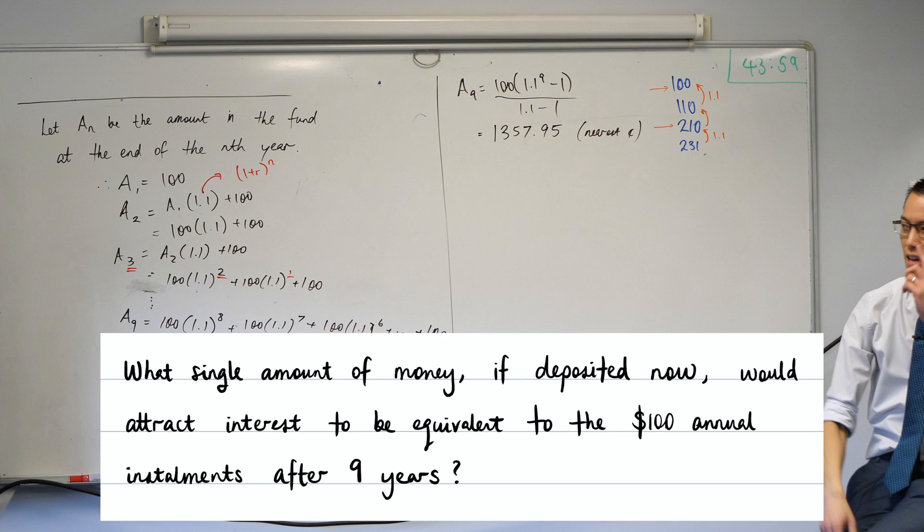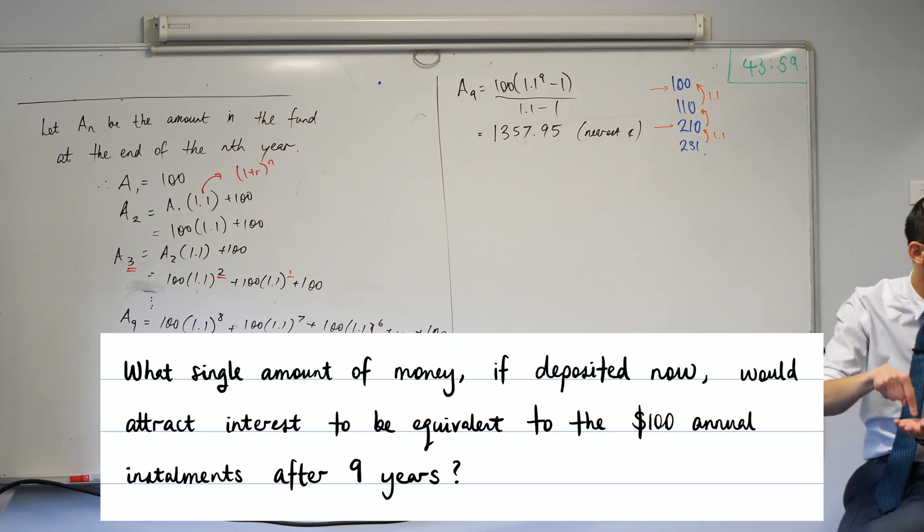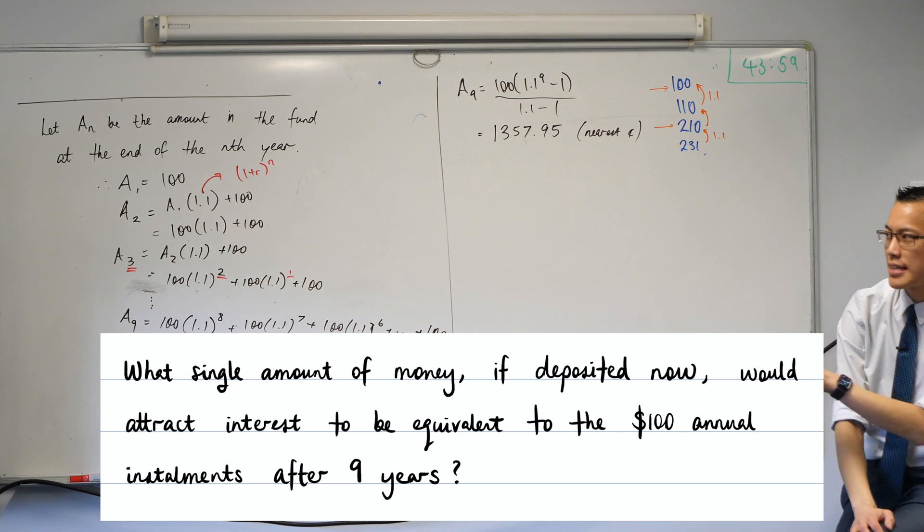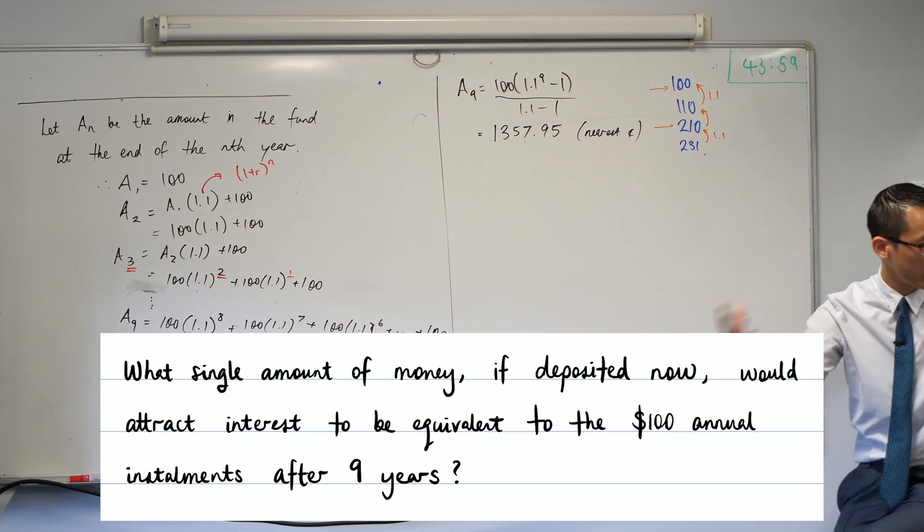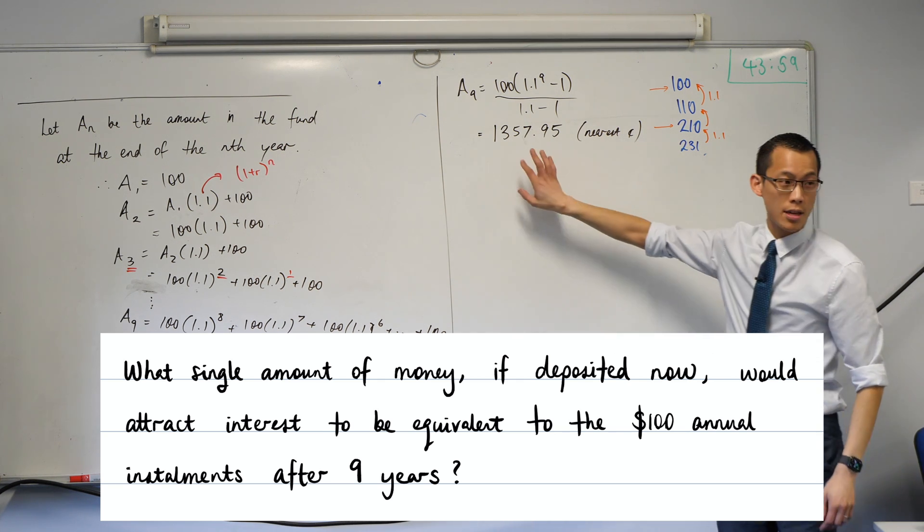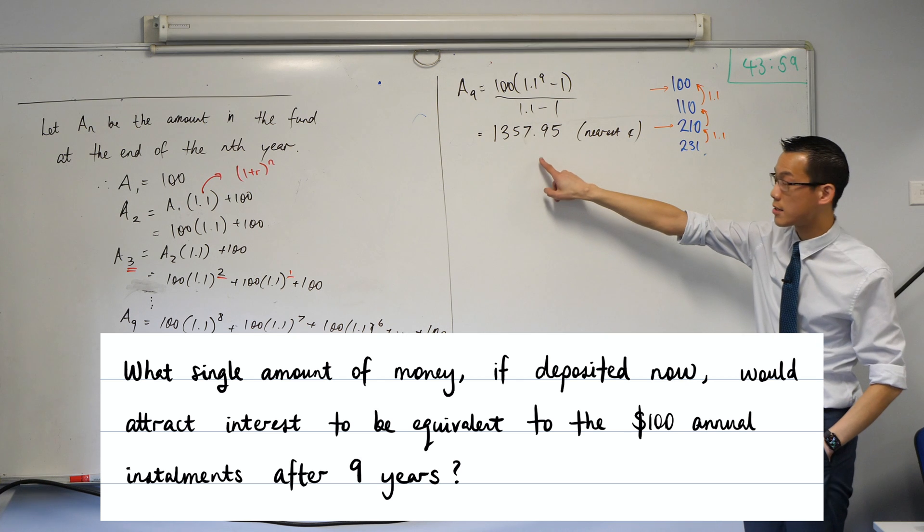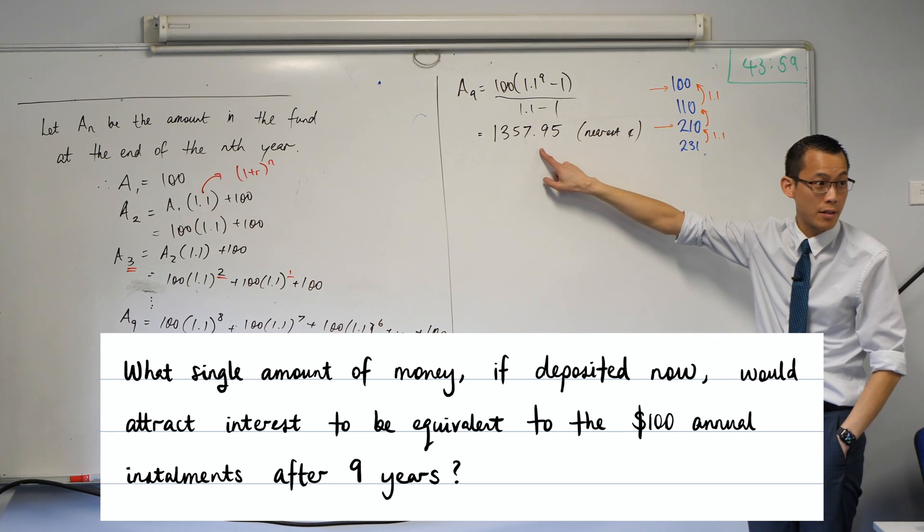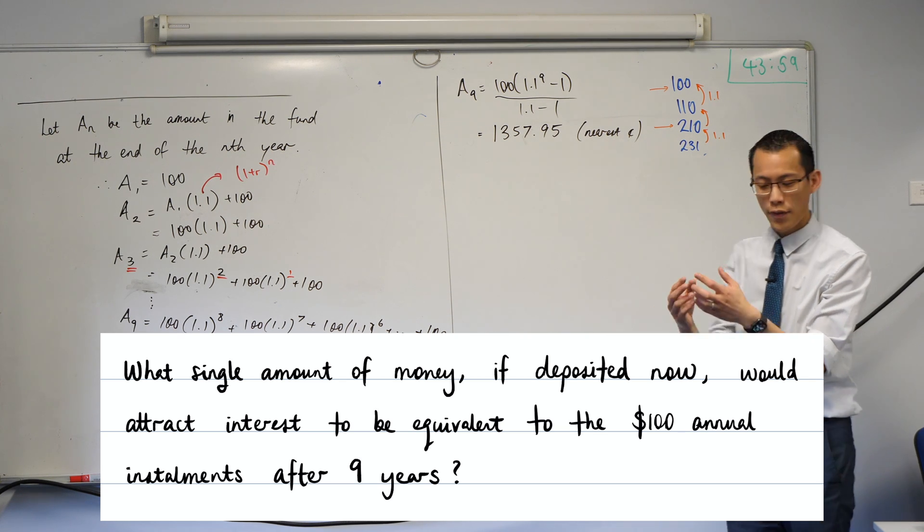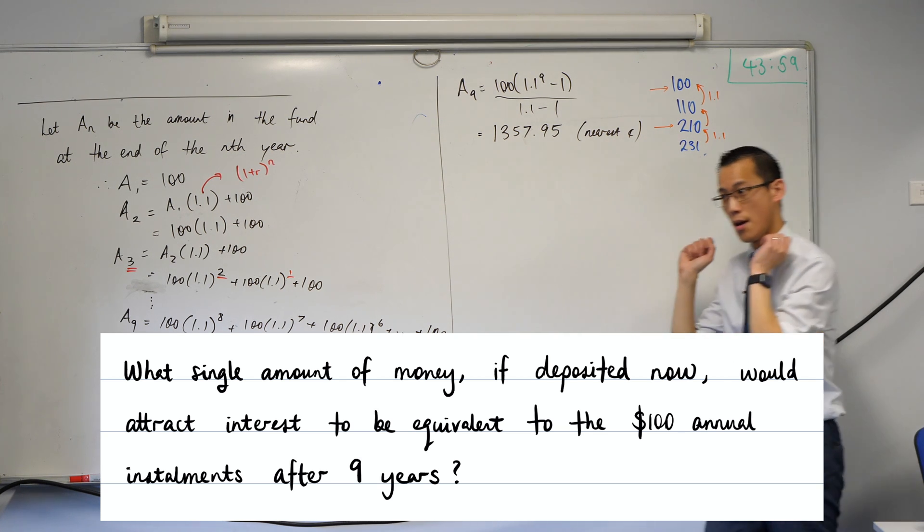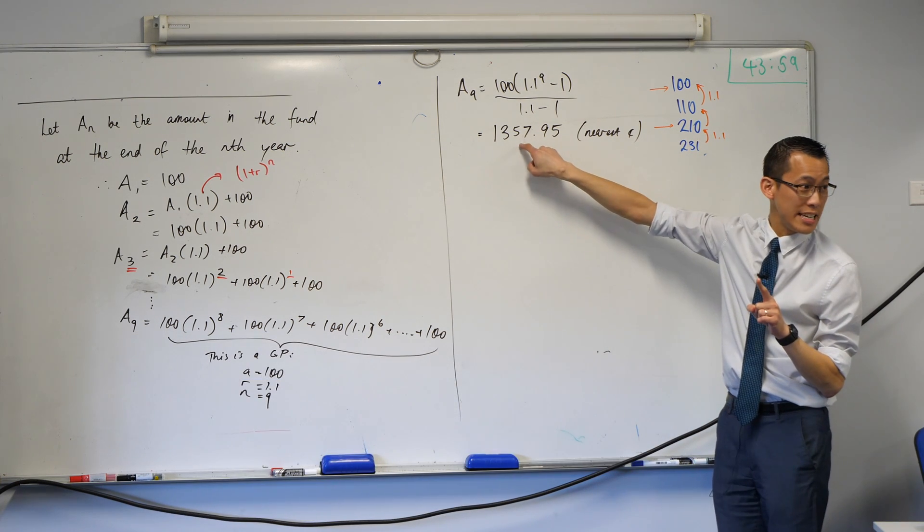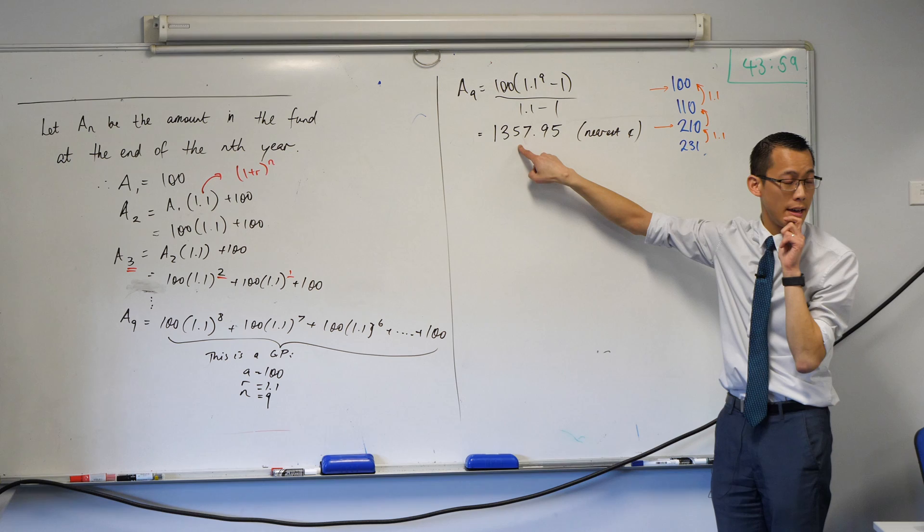What single amount of money, if we invested it now, just deposited it into the bank account and then just let it sit, right? What single amount of money would attract interest, like if we put it in and let it sit there for an amount of time, to be equivalent to this, to the $100 installments over nine years? That's what this produces, right? That's A9. After nine years, how much would I need to have put in to still arrive at this point?